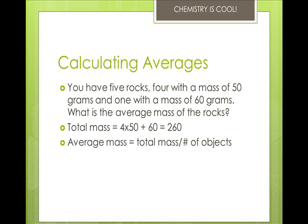So here's a quick average. You have five rocks, four with a mass of 50 grams, and one with a mass of 60. What is the average mass of the rocks? Well, you take four times 50, add 60, you get 260, divide it by the total number of objects, which is five. And so your average mass is 52 grams.